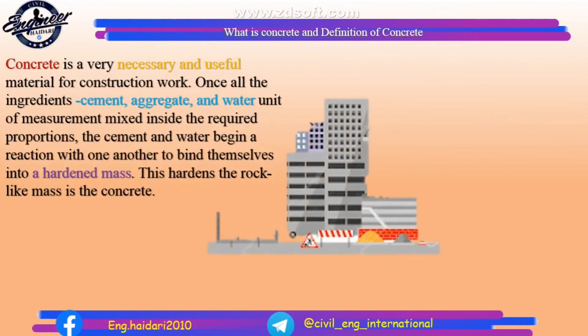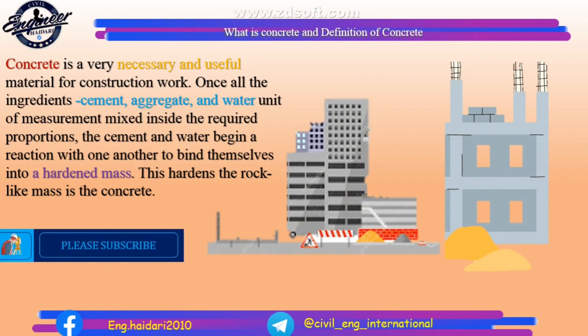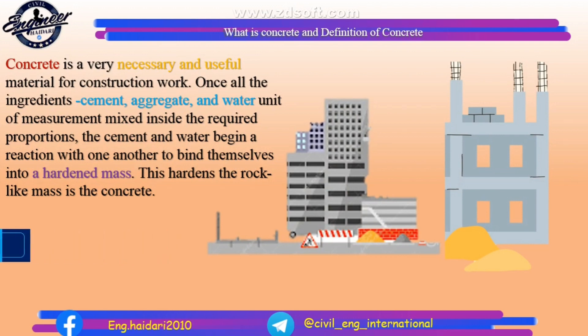Concrete is a very necessary and useful material for construction work. Once all the ingredients — cement, aggregate, and water — are mixed in the required proportions, the cement and water begin a reaction with one another to bind themselves into a hardened mass. This hardens into a rock-like mass as the concrete.